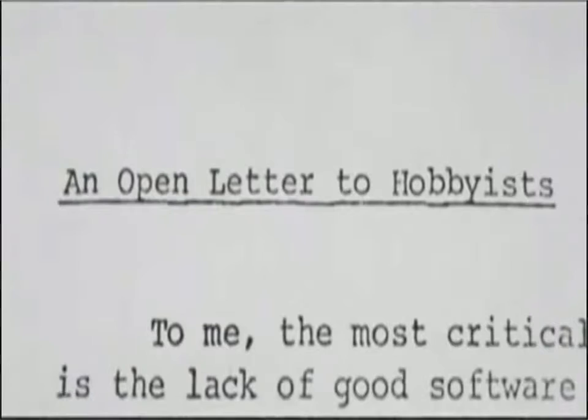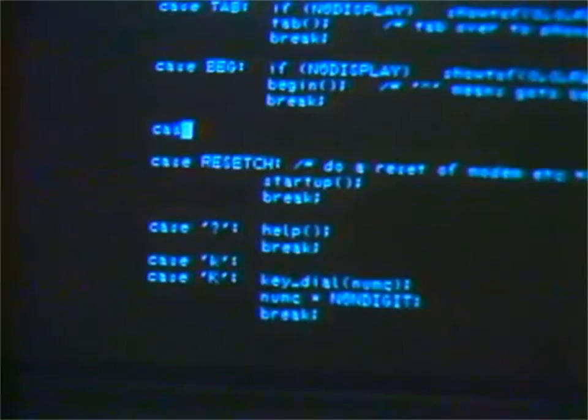In this presentation, we will explain how the idea of open source software came to be, and how change came about after Bill Gates addressed hobbyists in an open letter concerning the stealing of his company's software. We will describe the development of the Linux kernel according to Linus Torvalds, as well as the further evolution of Linux and its commercialization.